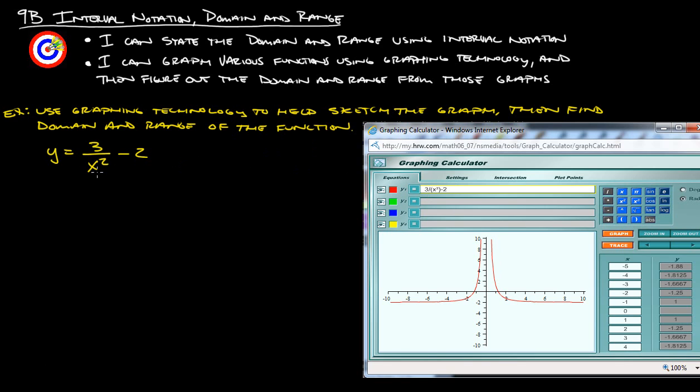To type this in here, you have to do 3 and you're going to divide by x squared. So I did 3 divided by, and I did parentheses x squared to make sure that my x squared stayed on the bottom, because if you did 3 divided by x and then you put squared, it might not give you what you want. And then we subtract 2. Once you plug that in, you hit graph, and then it gives you this lovely graph here.